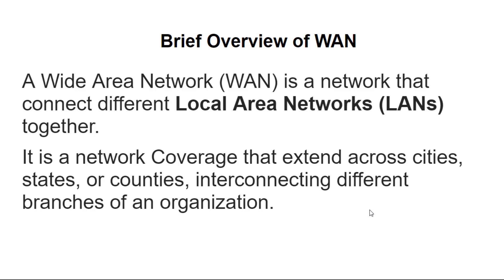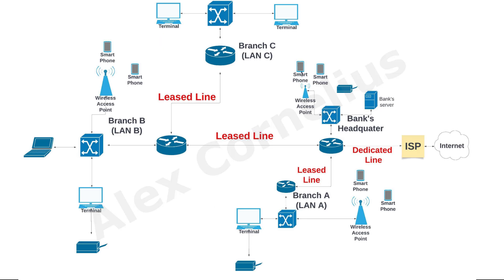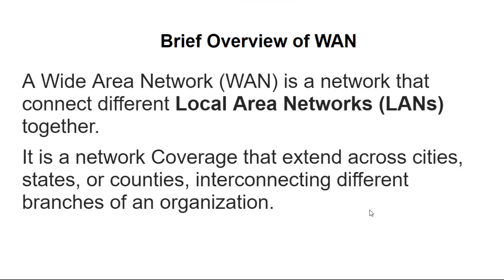A Wide Area Network is a network that connects different local area networks. It is a network coverage that extends across cities, states, and countries, interconnecting different branches of an organization. There are many enterprise businesses that have their branches distributed over a wide area. For instance, a bank usually has their branches distributed in a country, or even in a continent, or internationally. So a Wide Area Network is a type of network that a bank can use to interconnect their branches so that they can have a secure network.